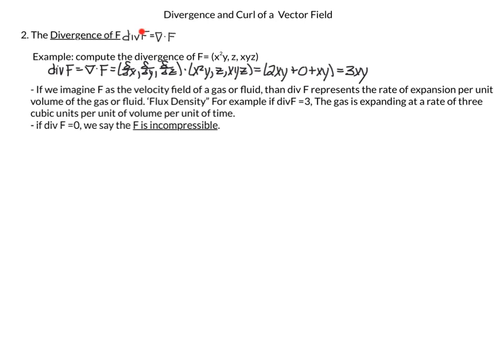Now we are ready to talk about divergence. The divergence of f is equal to the del operator dot f. For example, if f is equal to (x²y, z, xyz), then the divergence is the del operator — which is d/dx, d/dy, d/dz — dot (x²y, z, xyz). So d/dx of x²y is 2xy, d/dy of z is 0, and d/dz of xyz is xy. So our final solution is 3xy.